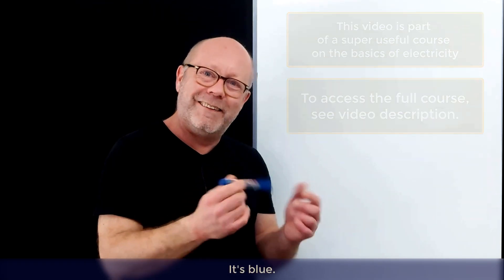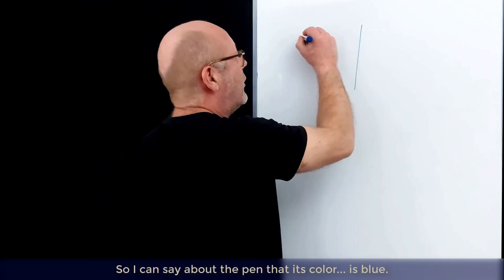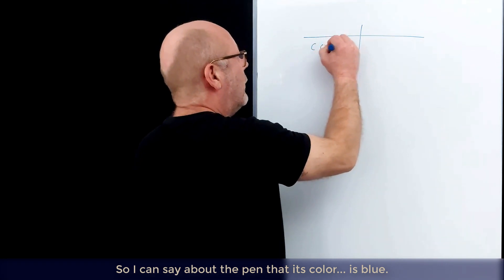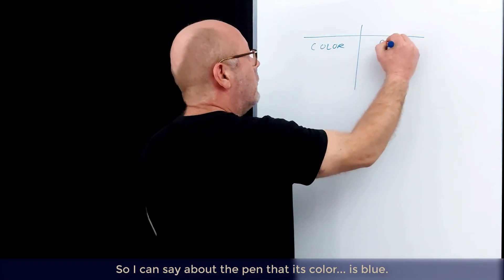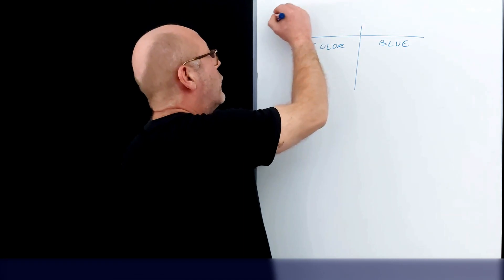Take this pen. What can you tell about it? It's blue, so I can say about the pen that its color is blue. That's for the pen.